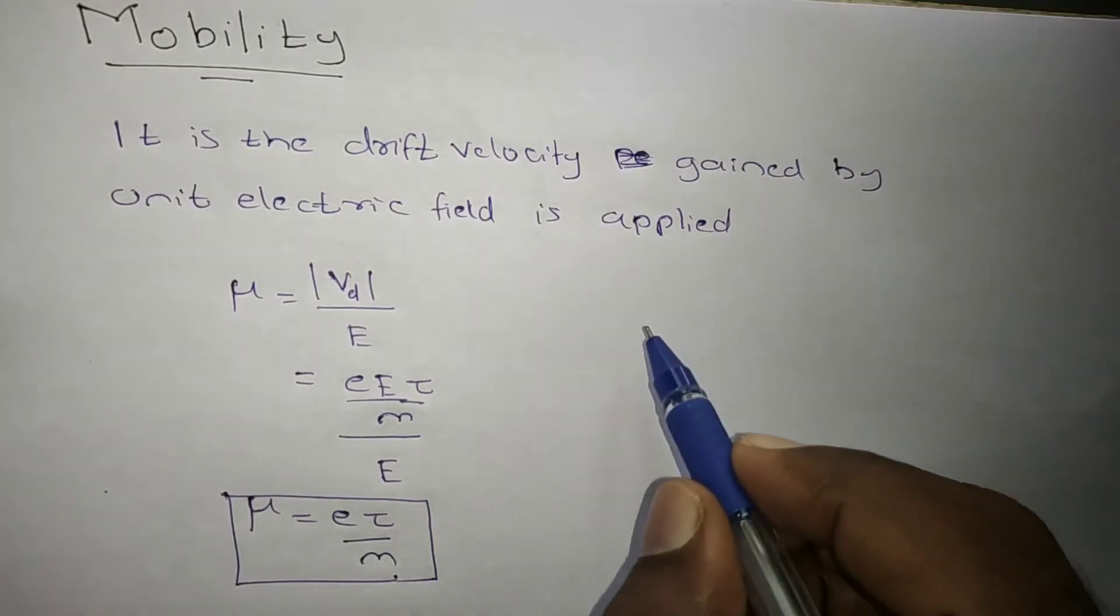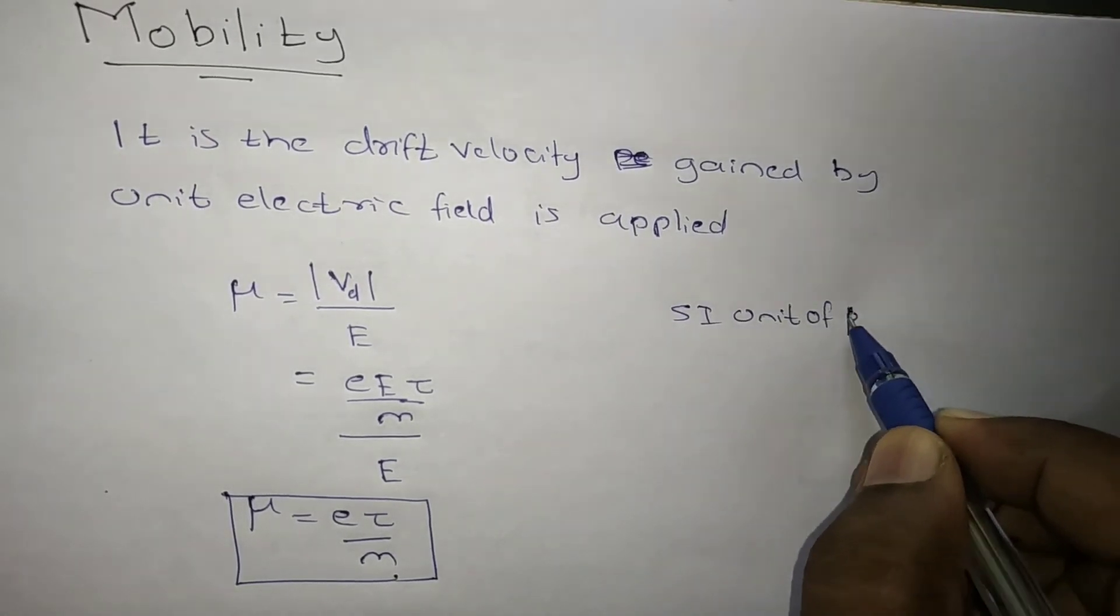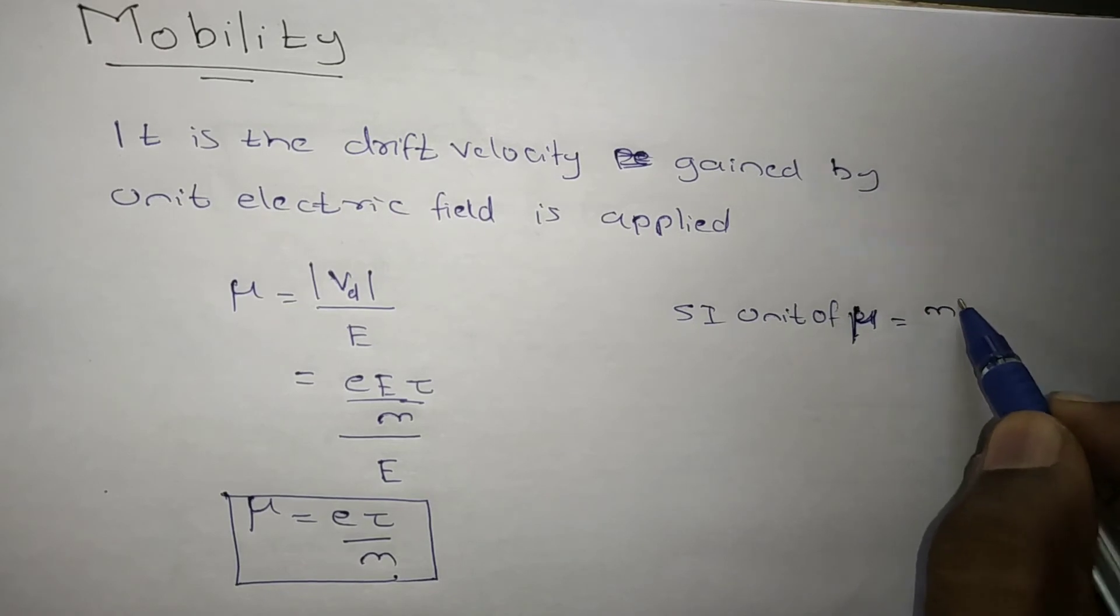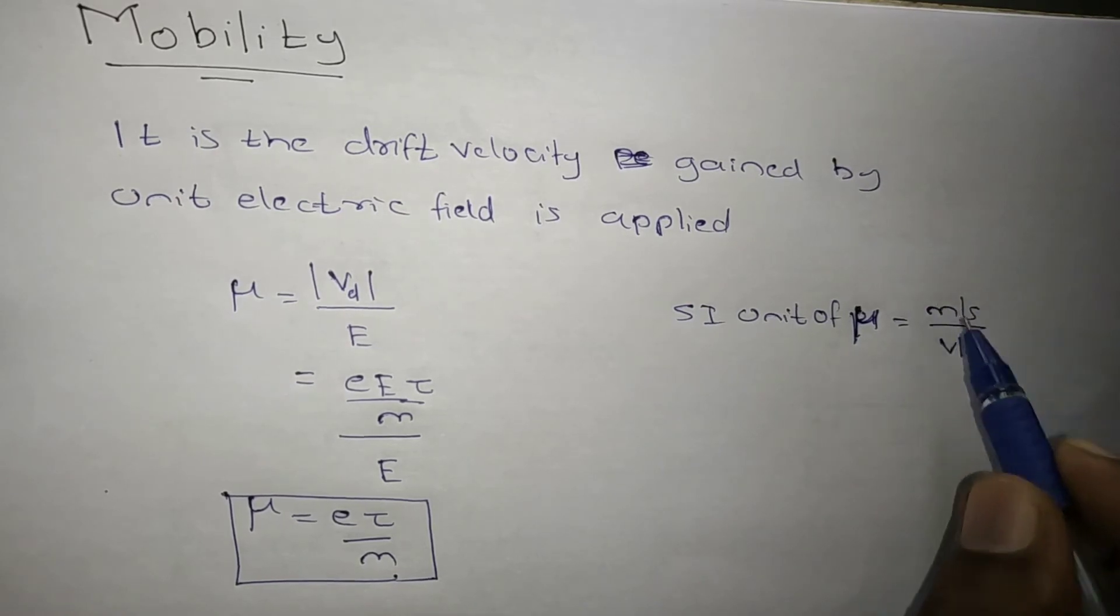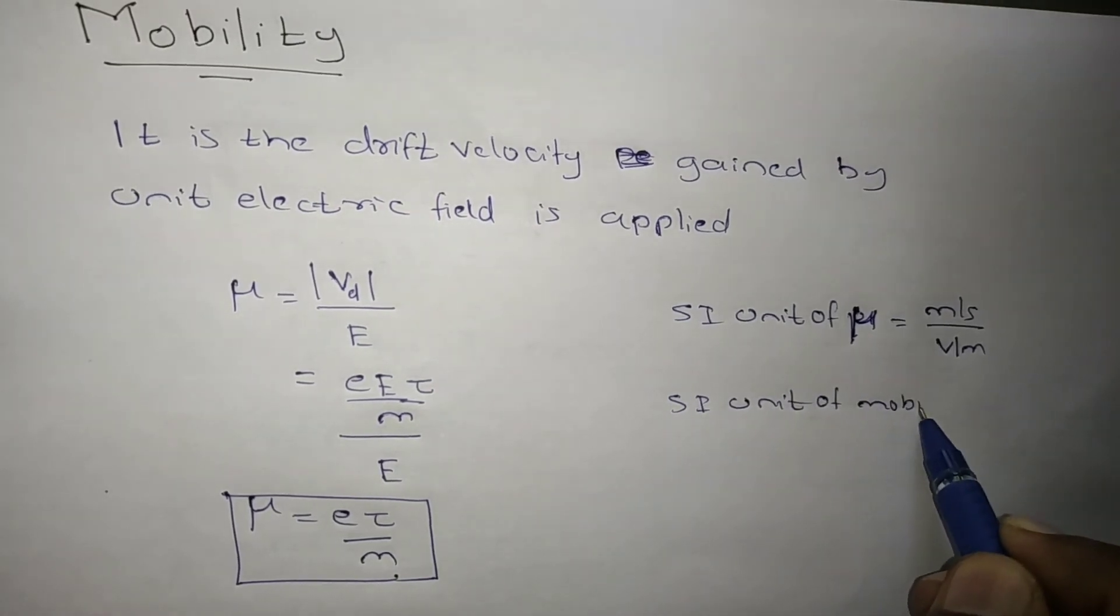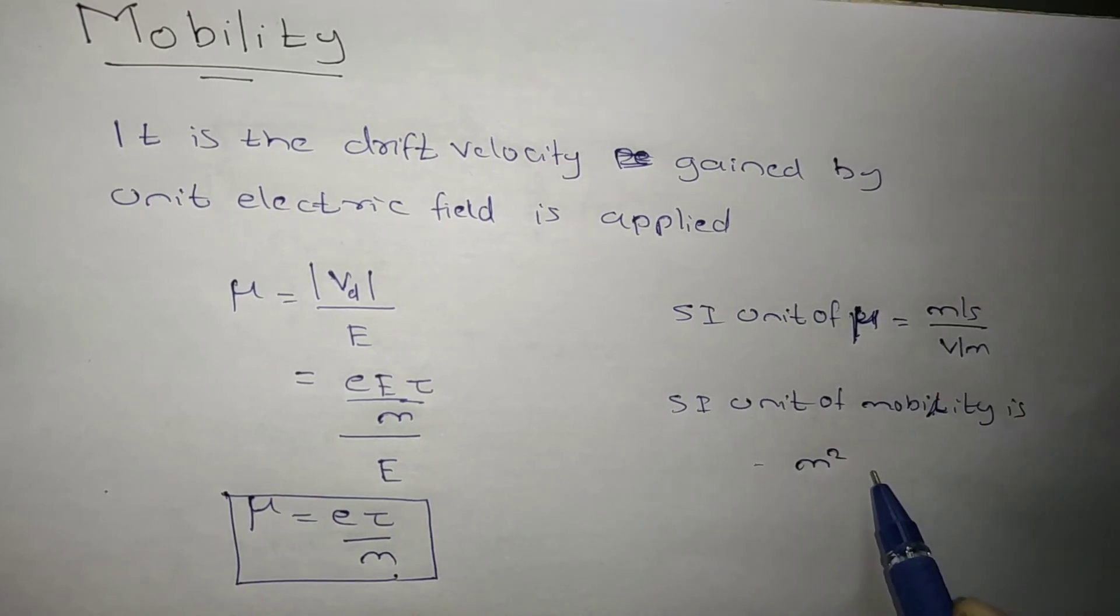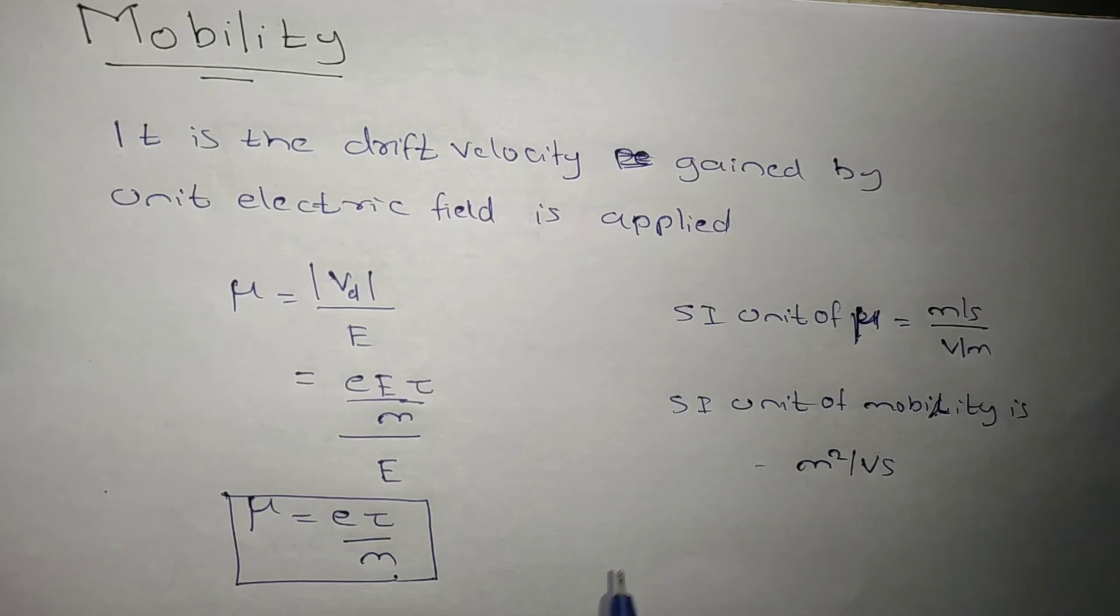Now we will see the unit of mobility, SI unit of μ. Then what is the unit of velocity? Meter per second. Unit of electric field, that is volt per meter. This meter will go there. So what you will get? SI unit of mobility is meter square per volt second. This meter will go there, this second will come.